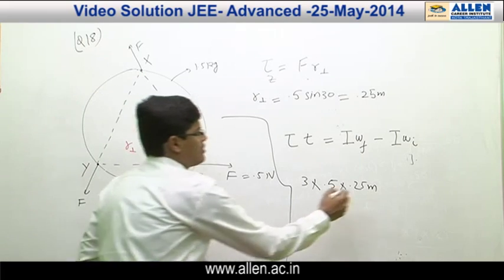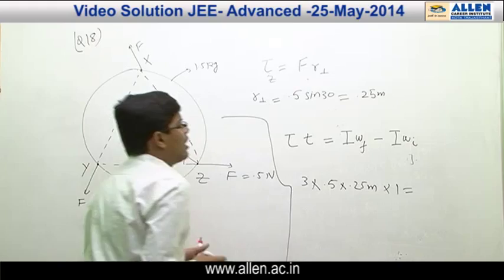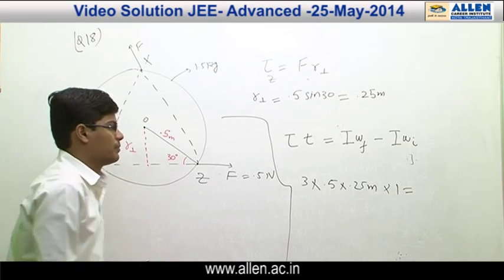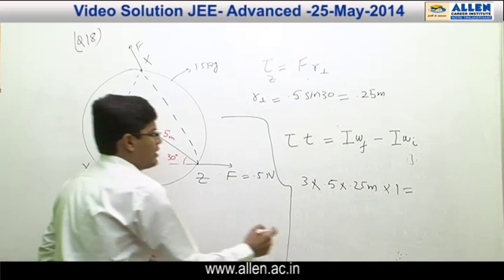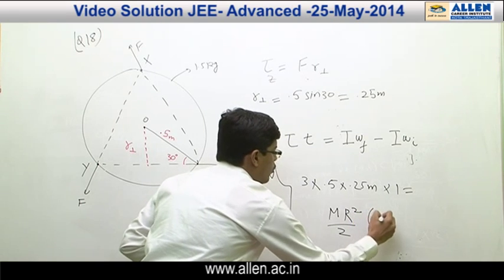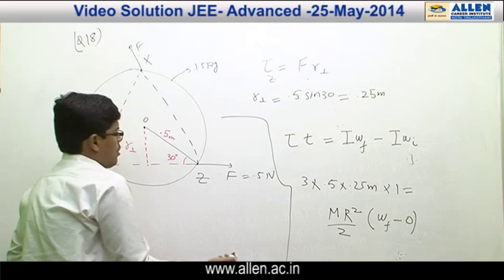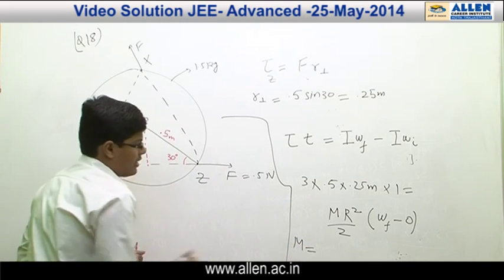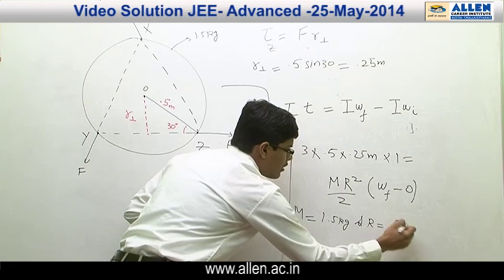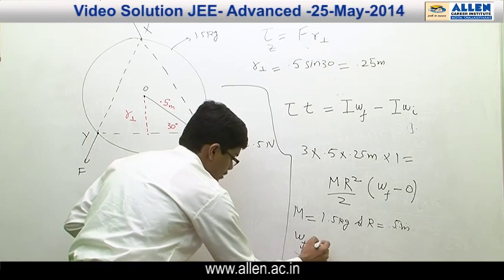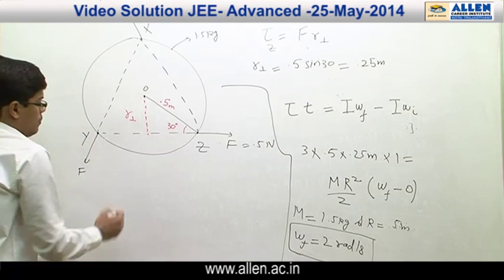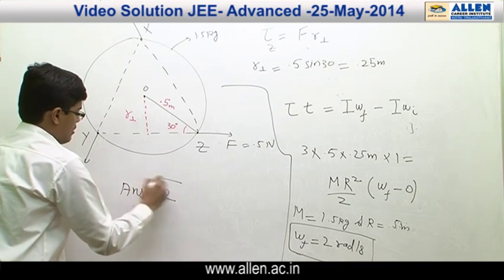So torque × time (1 second) = I·ω_final − I·ω_initial. The moment of inertia is M·R²/2, with M = 1.5 kg and R = 0.5 meter, and the initial angular velocity is 0. Solving, omega_final = 2 radian per second. So the answer to question number 18 is 2.